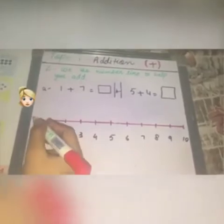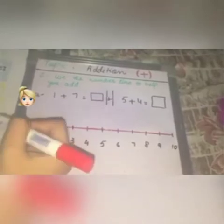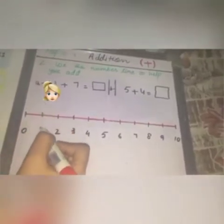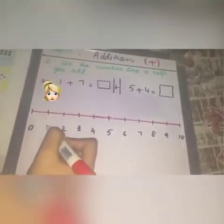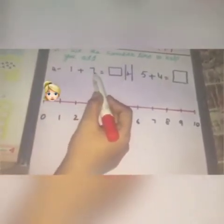You can also use a number line to add numbers. For example, Sarah is standing on zero. Her teacher asked her to take one step — now Sarah is on one. Again, the teacher asked Sarah to take seven steps: one, two, three, four, five, six, seven.